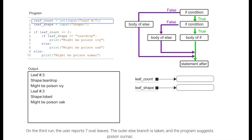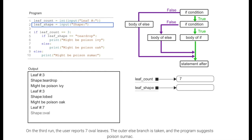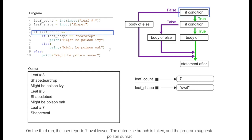On the third run, the user reports seven oval leaves. The outer else branch is taken, and the program suggests poison sumac.